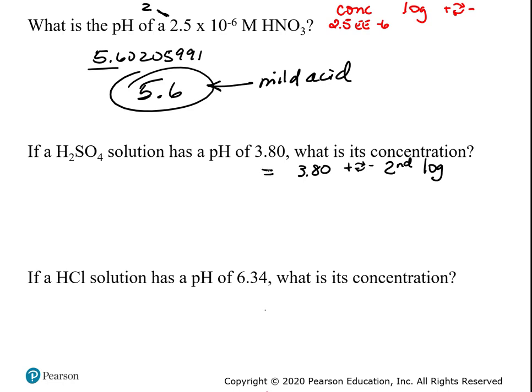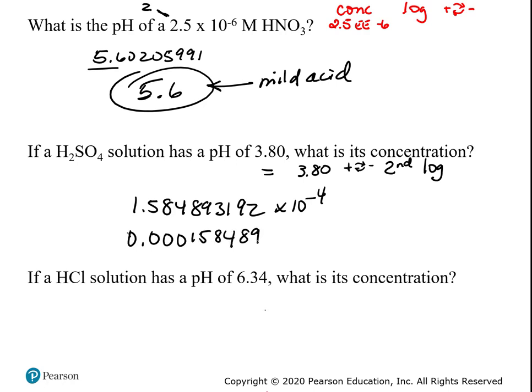In scientific notation, I got 1.584893192 times 10 to the negative 4th. In expanded form, I got 0.000158489. Those are the exact same numbers — they're exactly the same from the exponent side perspective. If it's concentration, it's the capital M for molar. To go from one to the other, the second button and number 4 puts it in normal decimal format, and second and number 5 puts it in scientific notation.